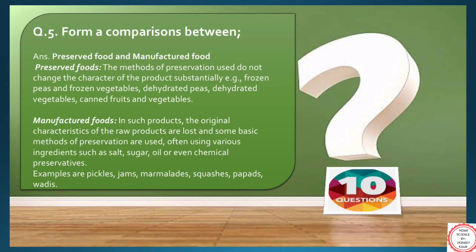Or even chemical preservatives. Examples of manufactured foods can be jams, jellies, pickles, marmalades, squashes, papad, etc.